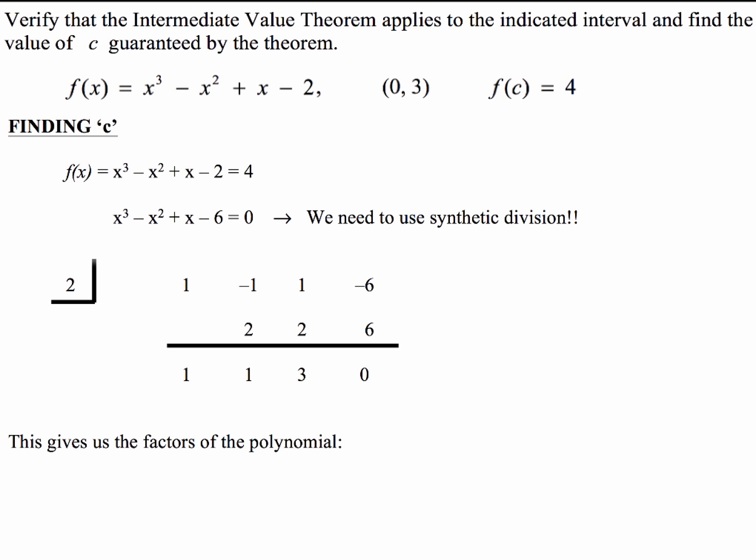Now this tells us two things. First, this gives us the two factors of my polynomial x³ - x² + x - 6. The two factors are (x - 2) and (x² + x + 3), and I know that equals 0 when x = 2. The other thing that this tells us, and this is the part you have to state also, is that f(2) = 4, or my c value is 2. So that's how you show the value of c that you're trying to find. Hopefully by now you not only know how to verify the IVT, but you can also find the value of c that's guaranteed by the theorem. Thanks for watching, and have a great day.